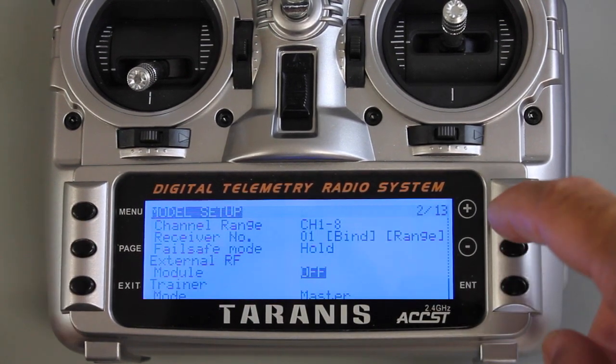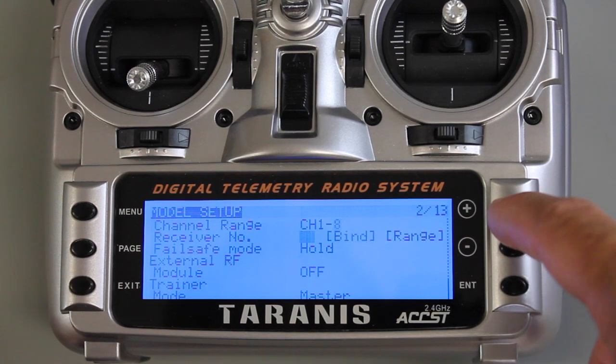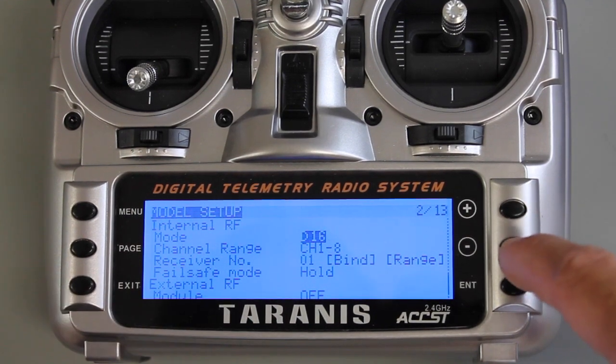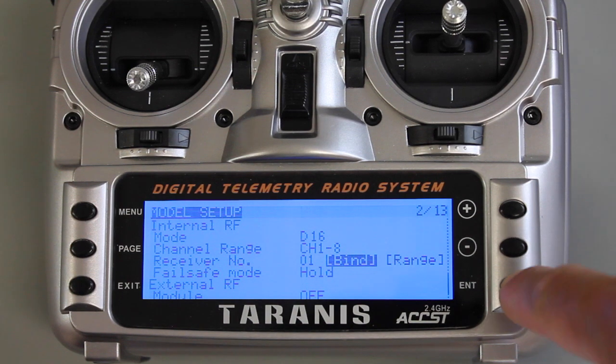So I'm going to go to the first screen, and you can see that we're in D16 mode. I'm going to scroll down to bind and hit enter.